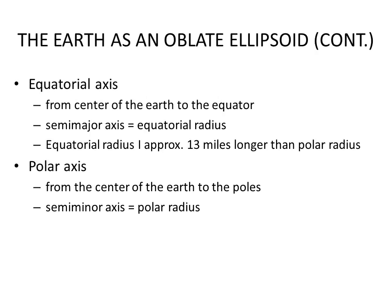That results in an equatorial axis that is a little bit longer than it is at the pole, so 13 miles longer than the polar radius. So the equatorial axis is 13 miles longer than the polar axis.